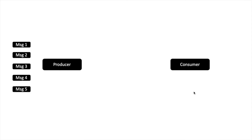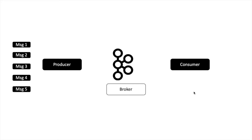Consumer is the application who wants to read the data and do some processing. Kafka broker is a service which facilitates transfer of data from producer to consumer — that's why it is called broker. It is just an application which is running on a computer; you can also call it a server.